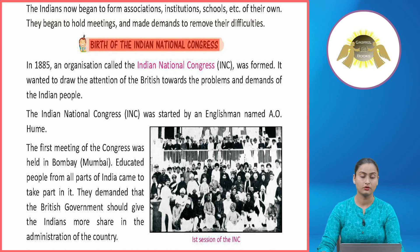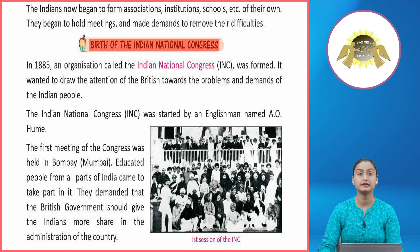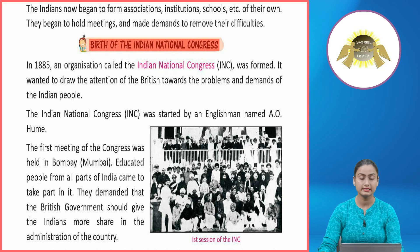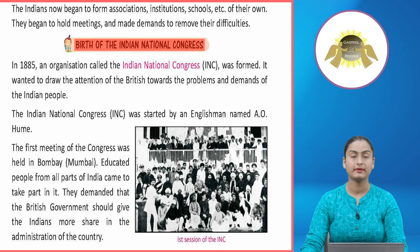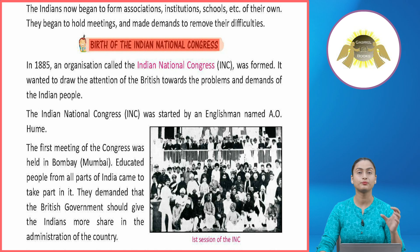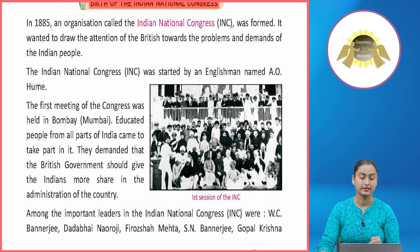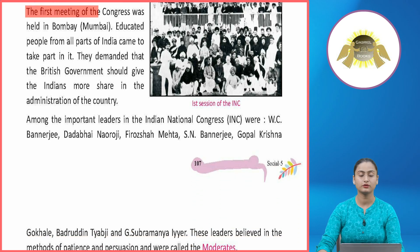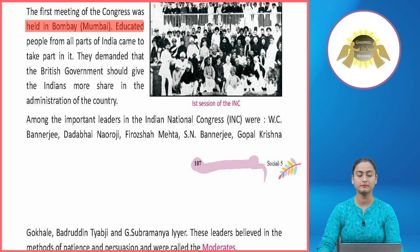Birth of the Indian National Congress: In 1885, an organization called the Indian National Congress (INC) was formed. It wanted to draw the attention of the British towards the problems and demands of the Indian people. The INC was started by an Englishman named A.O. Hume in 1885, taaki Britishers ko jo problems India mein Indians face kar rahi hain unki taraf akarshit kiya jaye.